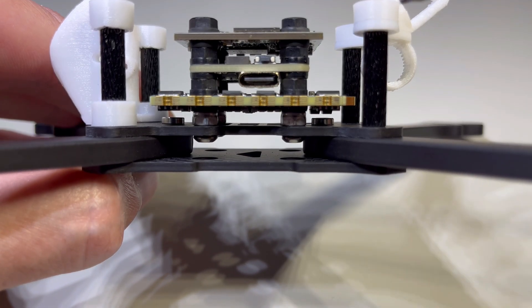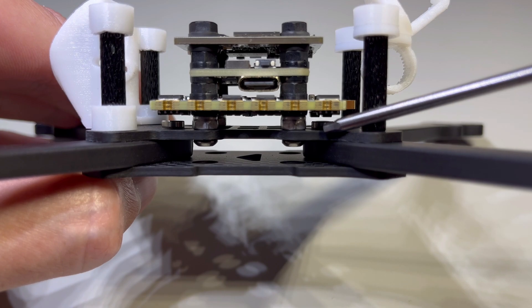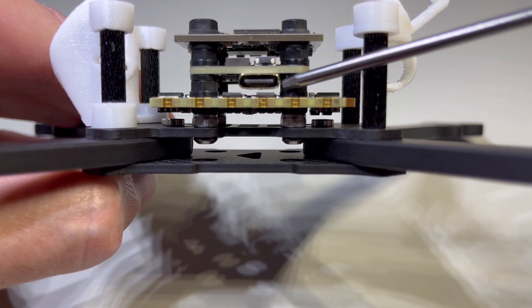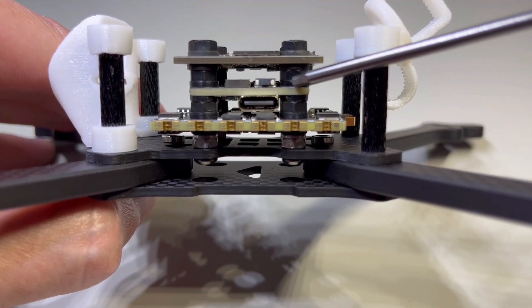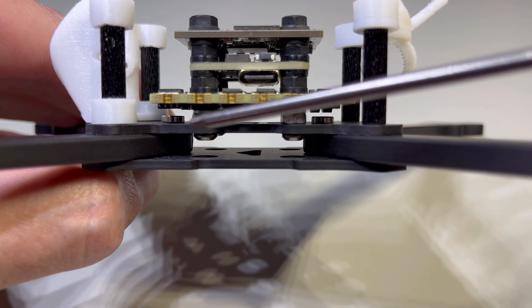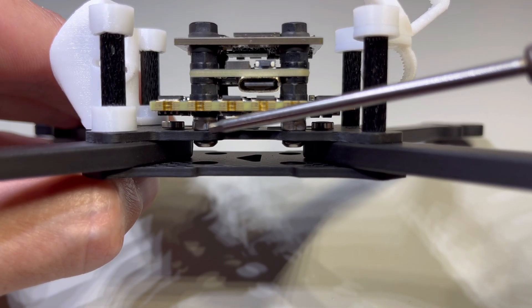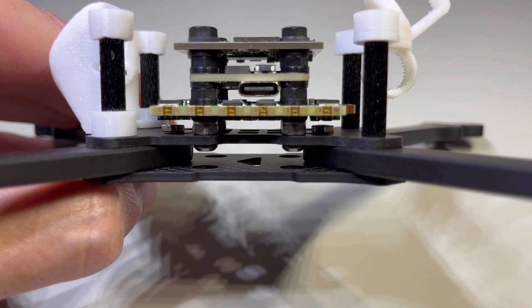So to recap, we have our 25mm stack screws installed. We have our aluminum lock nuts installed first. And we have our ESC, we have our nylon M3 stack nuts, we have our flight controller, we have another row of nylon M3 stack nuts, and on the top we have our VTX secured by one more row of nylon M3 stack nuts. And that's pretty much it.